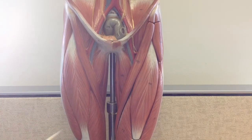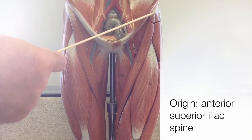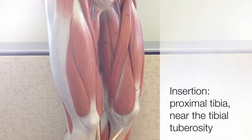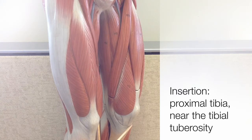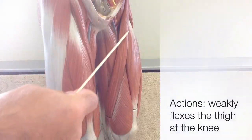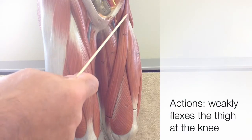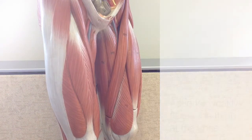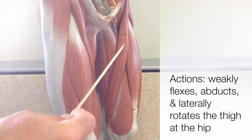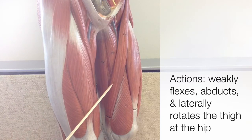The origin of the sartorius is at the anterior superior iliac spine of the coxal bone. It inserts on the proximal tibia, very close to the tibial tuberosity — that anterior bump that you can feel just below your knee on your tibia. The actions of the sartorius include weak flexion of the thigh at the knee. It also weakly flexes, abducts, and laterally rotates the thigh at the hip.